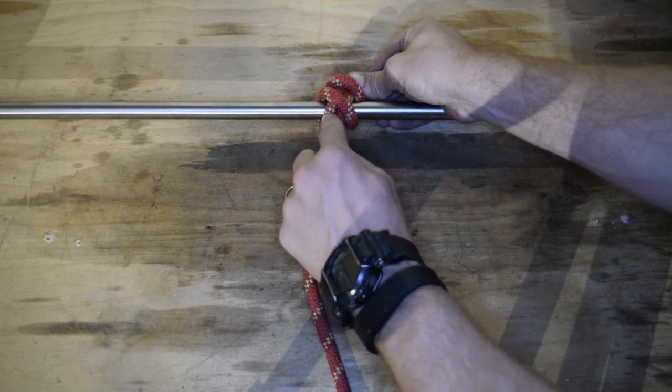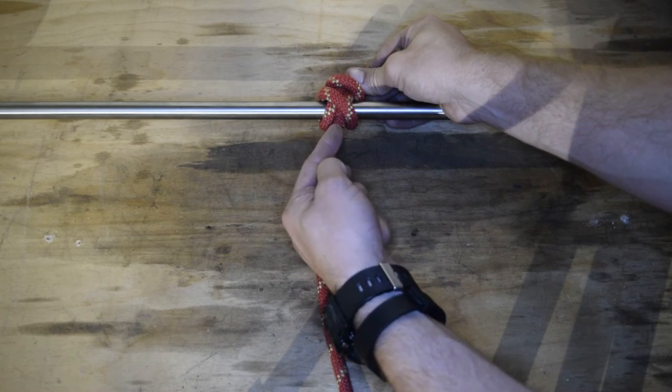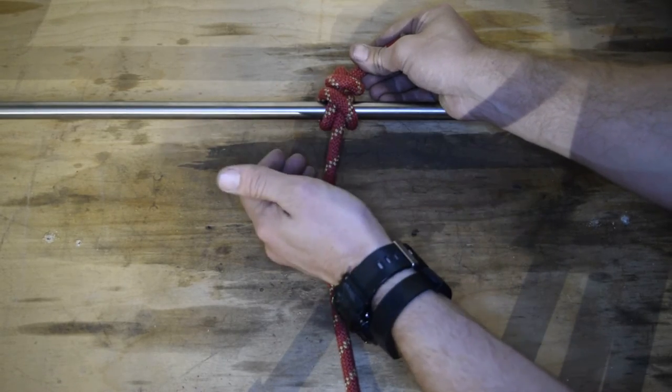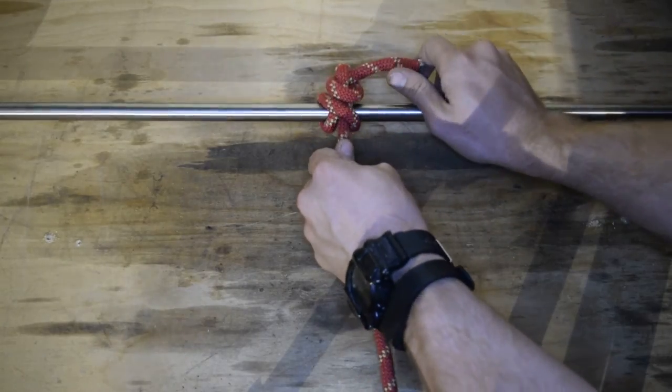So for a clove hitch, you're going to have two parallel knots here, two parallel ropes here, and you're going to have one going across them. That's a clove hitch, and this is what it looks like with the safety.